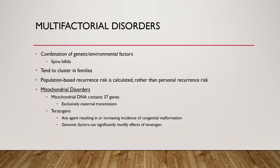Multifactorial disorders involve a combination of genetic and environmental factors, like spina bifida, and tend to cluster in families with population recurrence risk — sometimes caused by exposures that have caused genetic abnormalities. Mitochondrial disorders involve the mitochondria, which contains 37 genes and is usually maternally transmitted. Teratogens are agents that can increase the incidence of congenital malformations — such as radiation — where modification occurs and genomic factors can significantly modify the effects of specific teratogens.